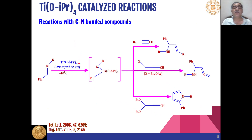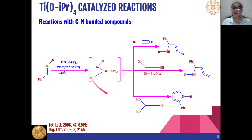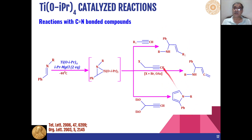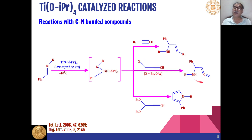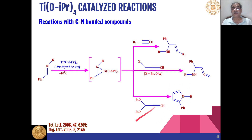Titanium tetra-isopropoxide and Grignard reagent mixture can also react with carbon-nitrogen double bonded compounds to give three-membered titanium complexes, which react with different electrophilic substrates. Terminal alkynes give amino compounds, and when X is a halogen or acetate, allenes containing amines are obtained as the product. With certain terminal alkynes, pyrroles are formed as the product.